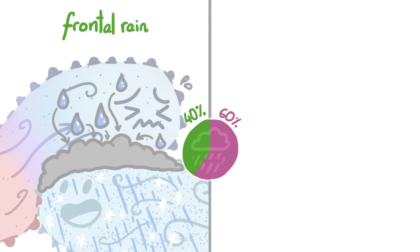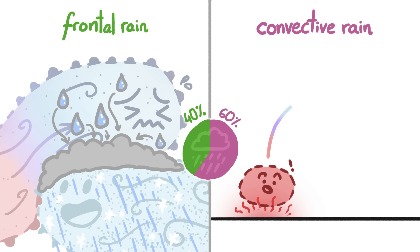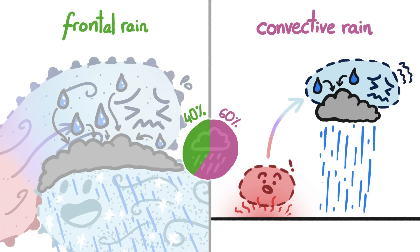But the majority of rain we experience comes from a process called convection. This type of rain happens when heat from the ground warms up a small mass of air, which then rises and cools, causing the water vapor in it to condense and fall to the ground.